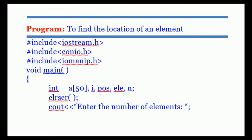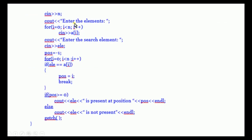We declare: int a[50] for the array, i as the loop counter, pos for position (acting as loc), ele for the search element, and n. We take cin >> n for the number of elements. A for loop with i < n reads a[i]. Then cin >> ele takes the element to search. pos is initialized to -1 (null).